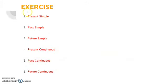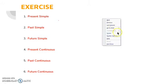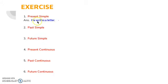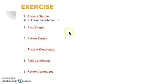Exercise. Take the sentence 'he writes a letter' — that is present simple tense. The verb 'writes' is the V1 form. In past simple, I have to use the V2 form of the same verb. Do you remember what is the V2 form of 'write'? It is 'wrote'. So the sentence will be: 'he wrote a letter'.